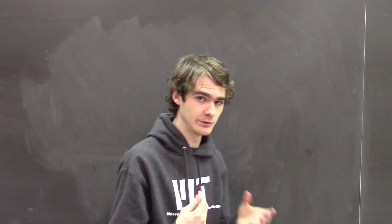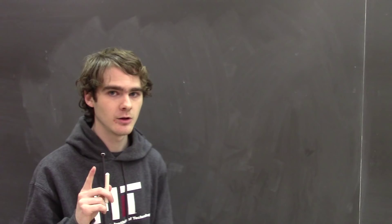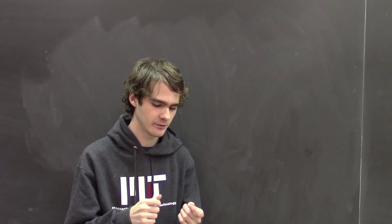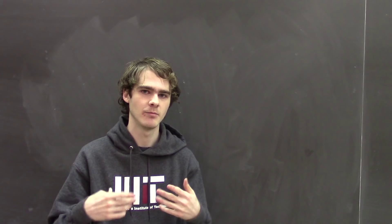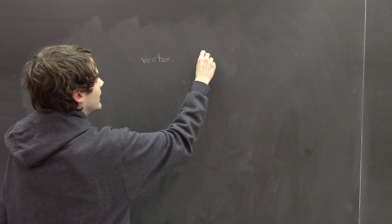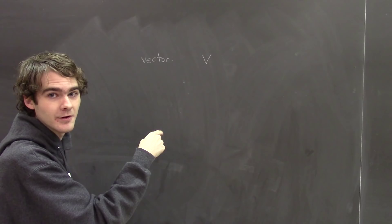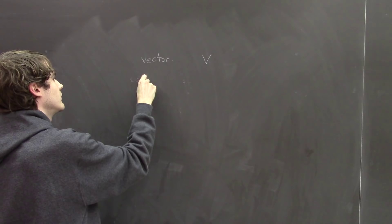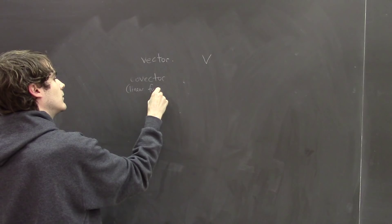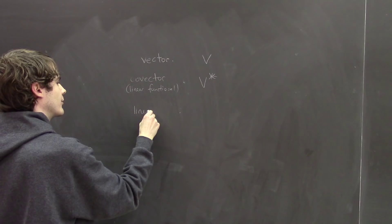I want to get you used to the calculus of tensors. As a first example: what I want to convey is that linear maps, vectors, functionals, bilinear forms — they're all just tensors of different types. A vector is just an element of a tensor product with one V factor and zero V* factors. A covector or linear functional is an element of V*. A linear map — an endomorphism of V — belongs to the space Hom_K(V, V).